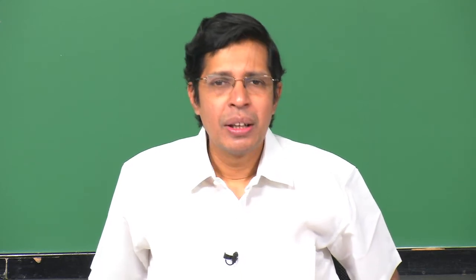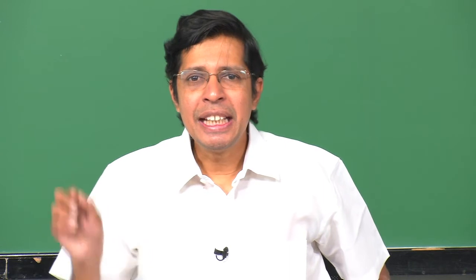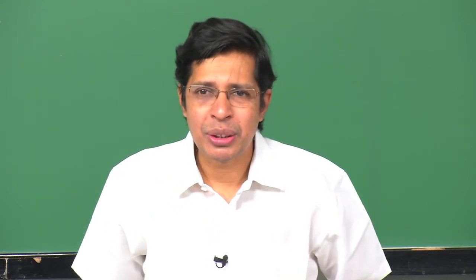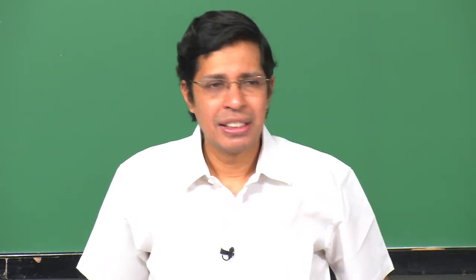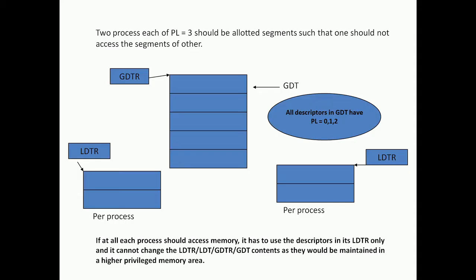When process 1 is executing, it will load the LDTR with that LDT's start address. When process 2 is executing, it will load the LDTR with process 2's LDT address. So essentially, the LDT is per-process. Note that process 1 and process 2 are both privilege level 3 code, so they cannot go and change the value of the LDTR, because changing the LDTR requires the LLDT instruction which requires privilege level 0.